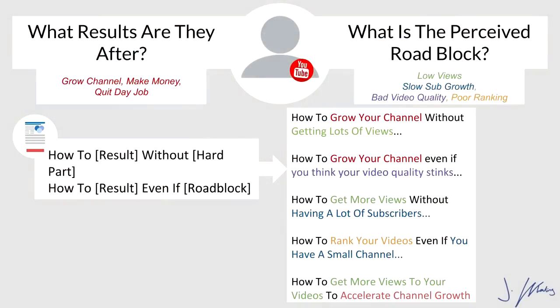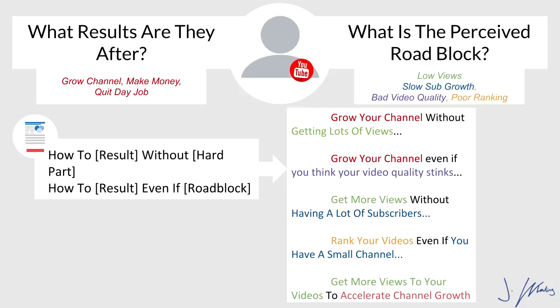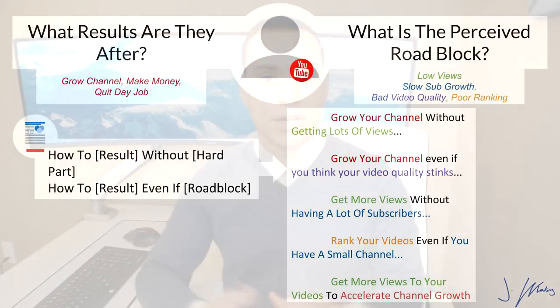Split testing is ongoing, so you really do want a lot of different headline options to test in the future. When it comes to bullet points, you can use the exact same formula — just chop off the 'how to.' So 'How to grow your channel even if your video quality stinks' becomes the bullet 'Grow your channel even if you think your video quality stinks.' Or 'Get more views without having a lot of subscribers.' Those sentences without the 'how to' at the beginning are all you need for bullet points. This is a quick and dirty way to have decent sales copy on your landing page ready to go.